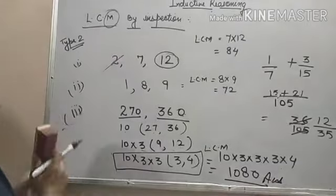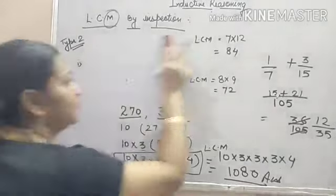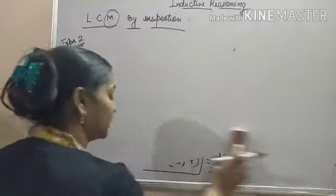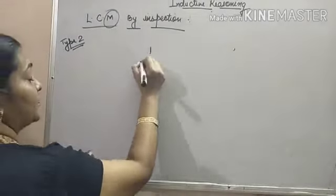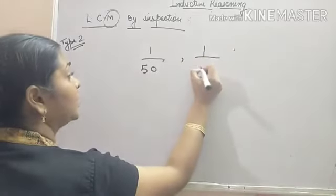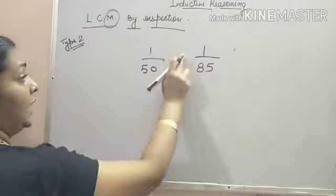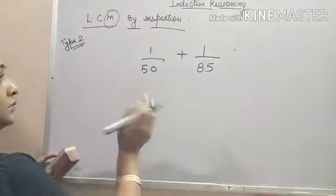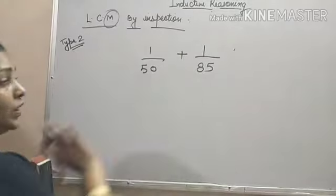Now, let us solve one problem related to this type. Suppose, there are two numbers. 1 by 50 and 1 by 85 and you have to add them.